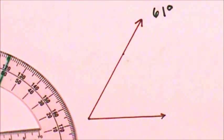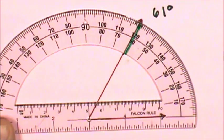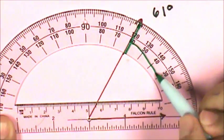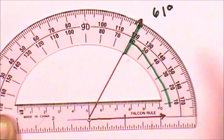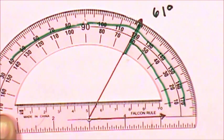It looks smaller than a right angle, which is 90 degrees. That means I have to use the inner scale and not the outer scale to measure the angle.